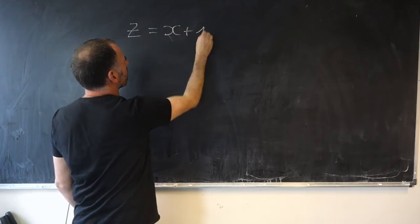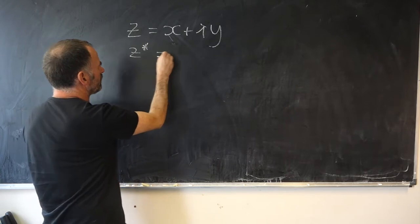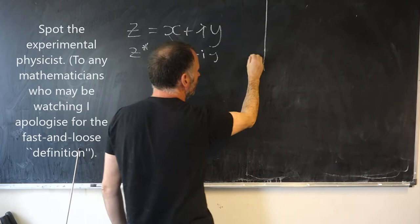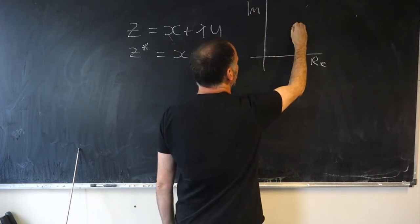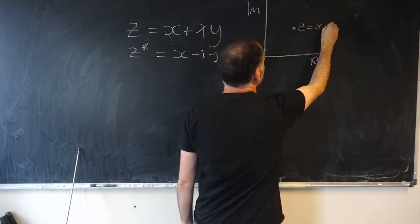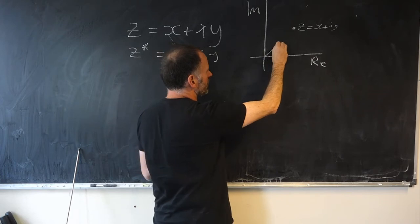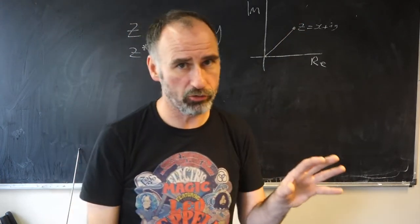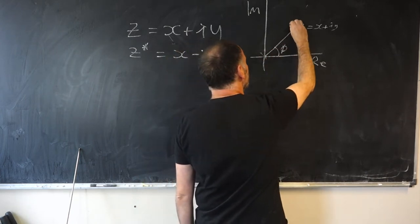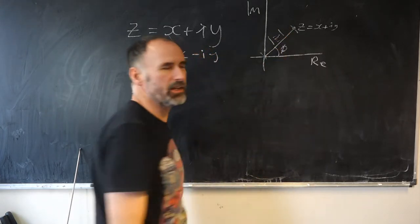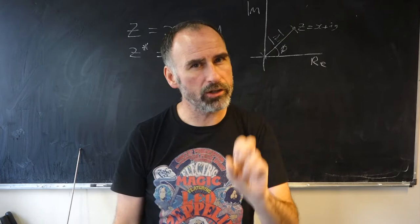Before we address that question, let's first have a little revision on what we mean by complex numbers and some of the key properties we're going to need for the quantum world. We define a complex number with a real and an imaginary part, and we define its complex conjugate. We can also define what this looks like on the complex plane: the real axis, the imaginary axis. Let's say we've got a complex number Z equals X plus iY. That's the rectangular definition. But we're most interested in the polar representation, where we have an angle phi and a distance representing the modulus of Z.